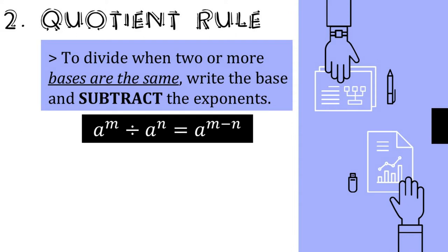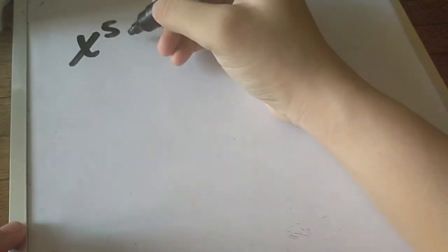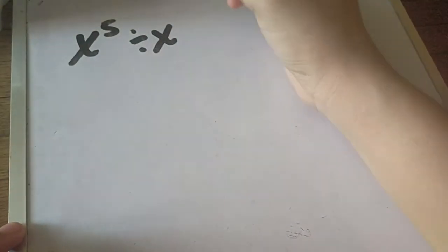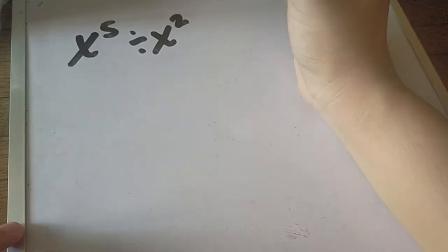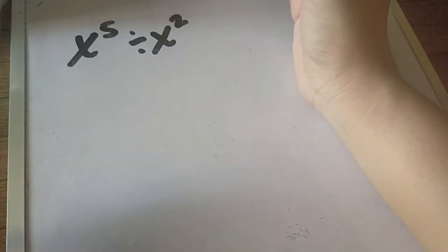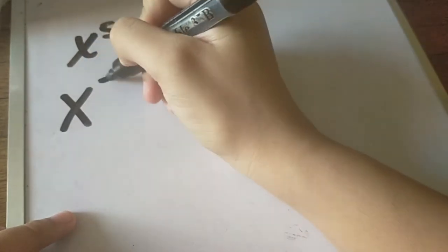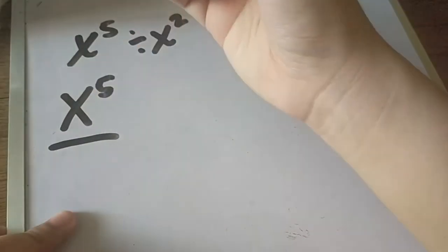I'm going to show you why we subtract the exponent and not divide it, unlike what we do with coefficients. Let me show you why subtraction is used for exponents and not division. Let's have an example: we have x raised to 5 divided by x raised to 2. Let's write it in fraction form.